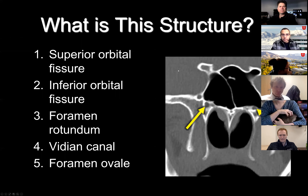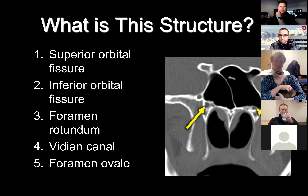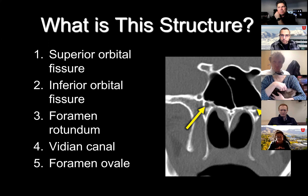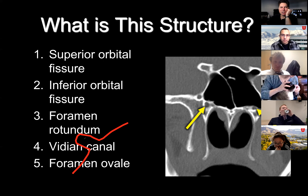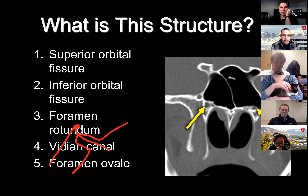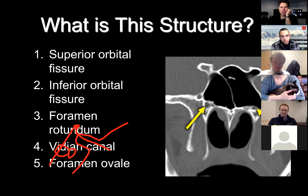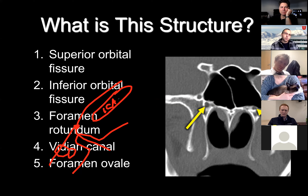That's the vidian canal — the vidian or pterygoid canal. What goes through there? The vidian nerve. What fibers make up the vidian nerve? The greater superficial petrosal nerve. When we think about where the ICA is and where CN7 comes in, there's the labyrinthine segment going forward to the geniculate ganglion, then the tympanic segment goes back under the lateral semicircular canal. The greater superficial petrosal nerve comes off there and goes immediately lateral to the ICA.